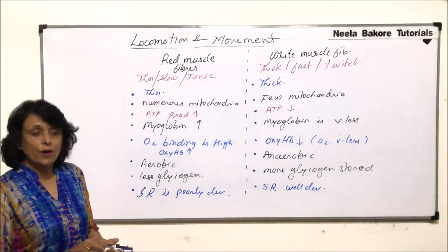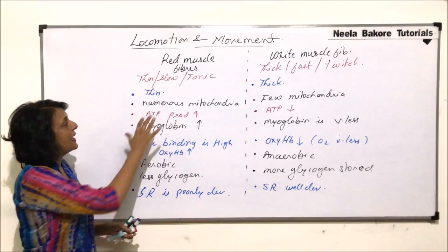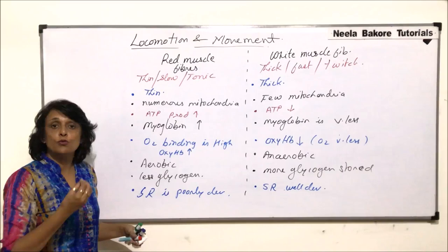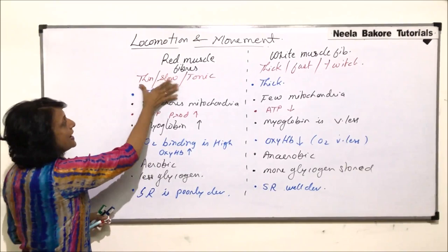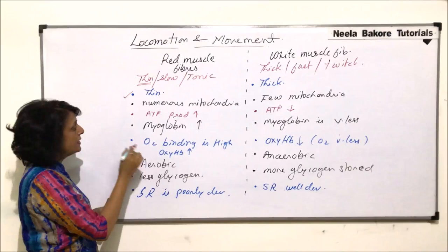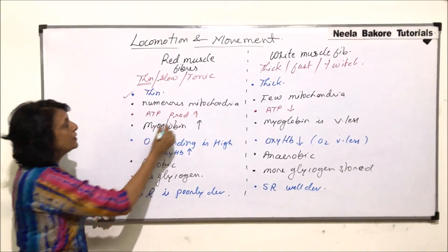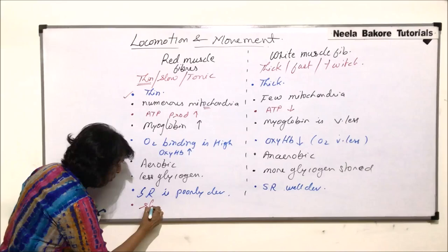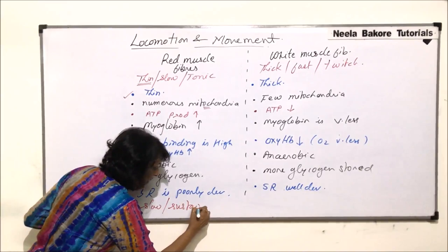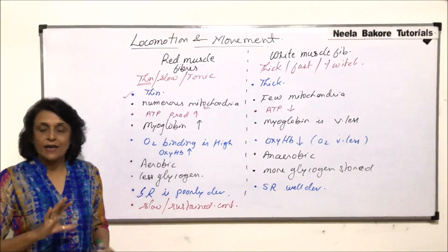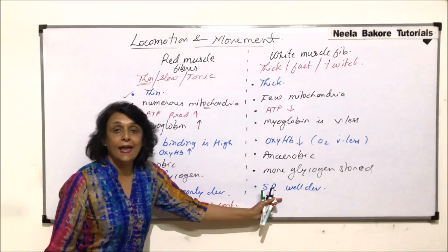Looking at all these points, we can conclude that red muscle fibers have more mitochondria, higher oxygen holding capacity due to the pigment myoglobin which is a red pigment — that is why these fibers are called red. They are thin, hence the name thin muscle fiber. Red muscle fibers show slow and sustained contractions without undergoing fatigue, because aerobic breakdown continuously makes ATP available via the mitochondria, allowing them to remain contracted for a very long period of time.